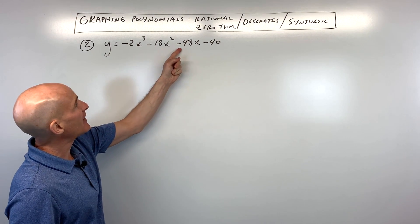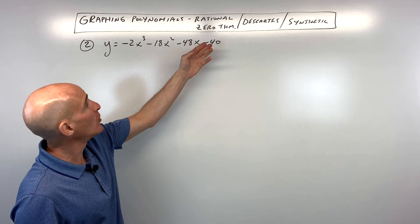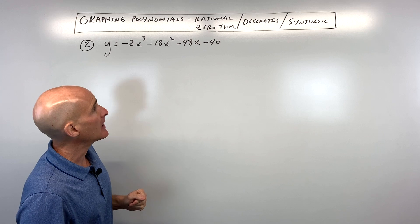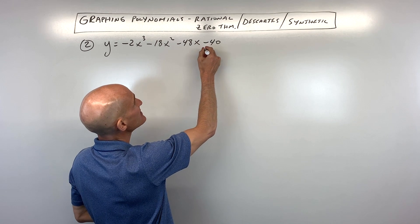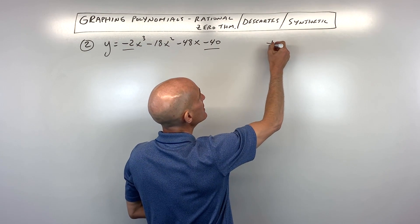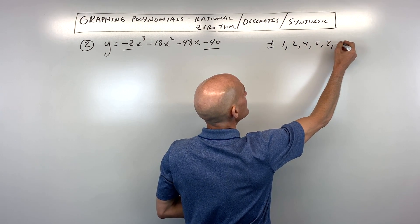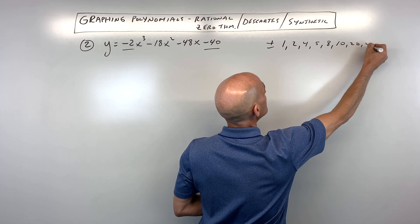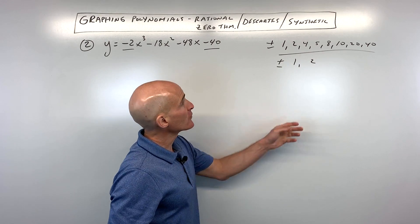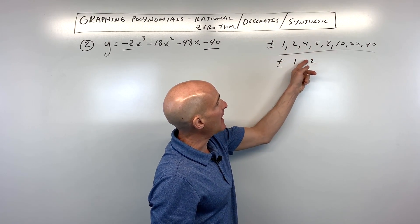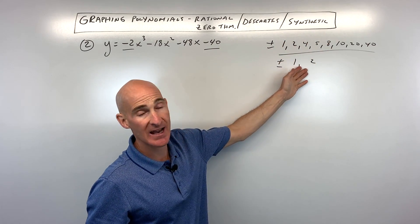The first thing I would do is see if I can factor this. If I can't, then I would go to the rational zero theorem. In this case, let's just go ahead and do the rational zero theorem since that's what we're practicing. We take all the factors of the constant divided by all the factors of the leading coefficient. So that would be plus or minus 1, 2, 4, 5, 8, 10, 20, and 40, all divided by plus or minus the factors of the leading coefficient, which would be 1 or 2. So for example, it could be like 1 half or 5 halves — positive or negative — any of those combinations.